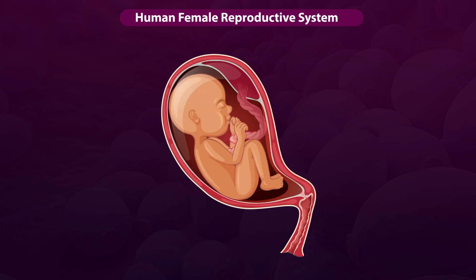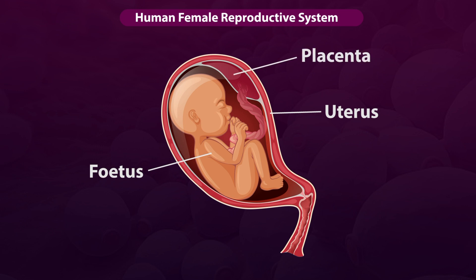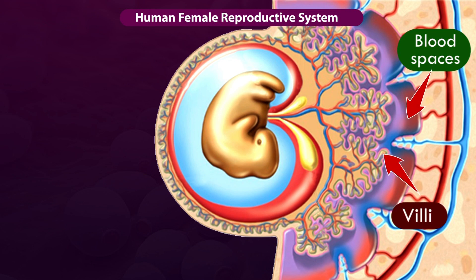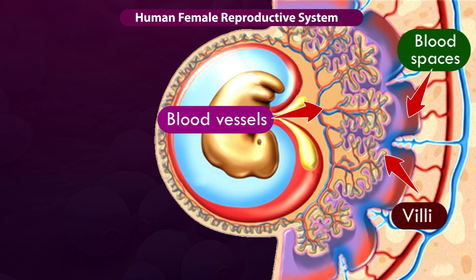After implantation, the embryo grows into a fetus. The embryo gets nutrition from the mother's blood with the help of a special tissue called the placenta. This is a disc-like structure embedded in the walls of the uterus. The placenta has blood spaces on the mother's side and villi on the fetus side. This arrangement provides a large surface area for the exchange of materials between the blood of the mother and the blood of the baby.